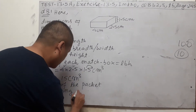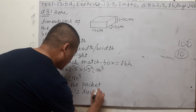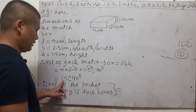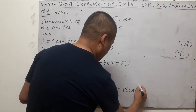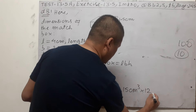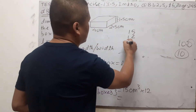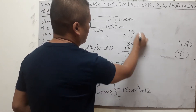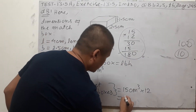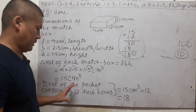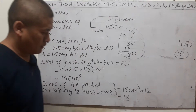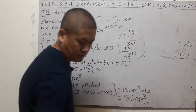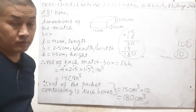The question asks for the volume of a packet containing 12 such boxes. Volume of one matchbox is 15 cm³, and there are 12 matchboxes, so 15 × 12 = 180. Therefore the total volume of the packet containing 12 matchboxes = 180 cm³.